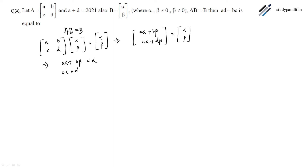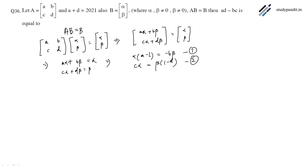From here we get: A·alpha plus B·beta equals alpha, and C·alpha plus D·beta equals beta. Rearranging: alpha times (A minus 1) equals minus B·beta — call this equation 1 — and C·alpha equals beta times (1 minus D) — call this equation 2.